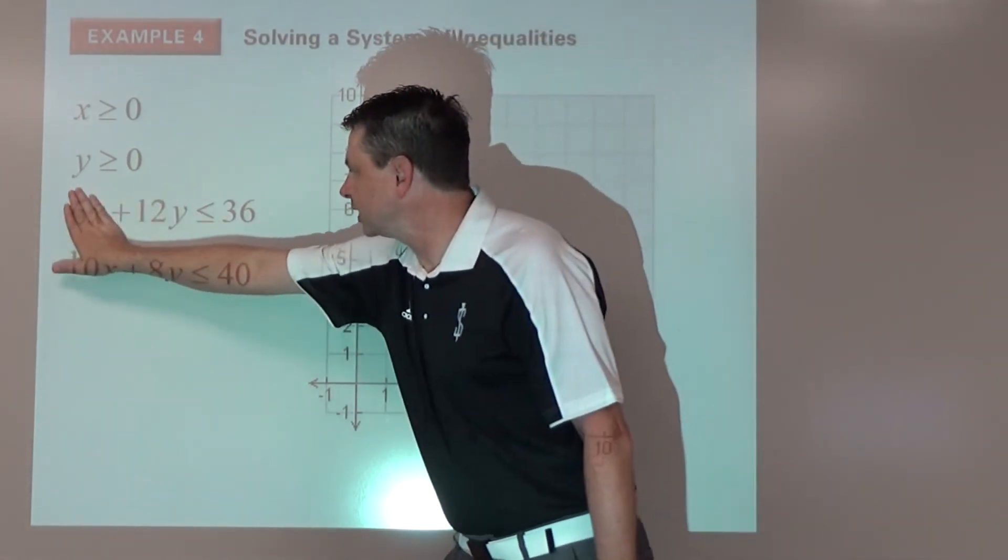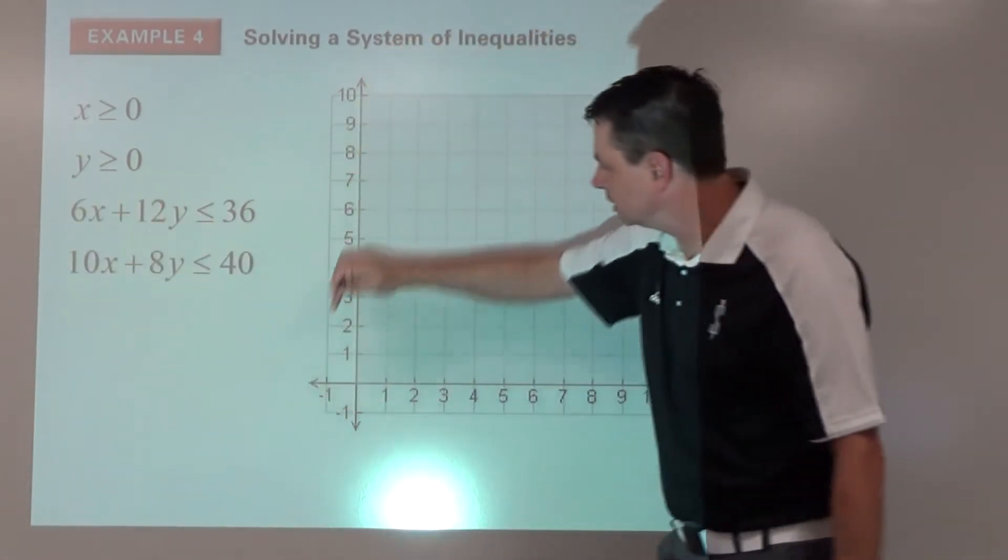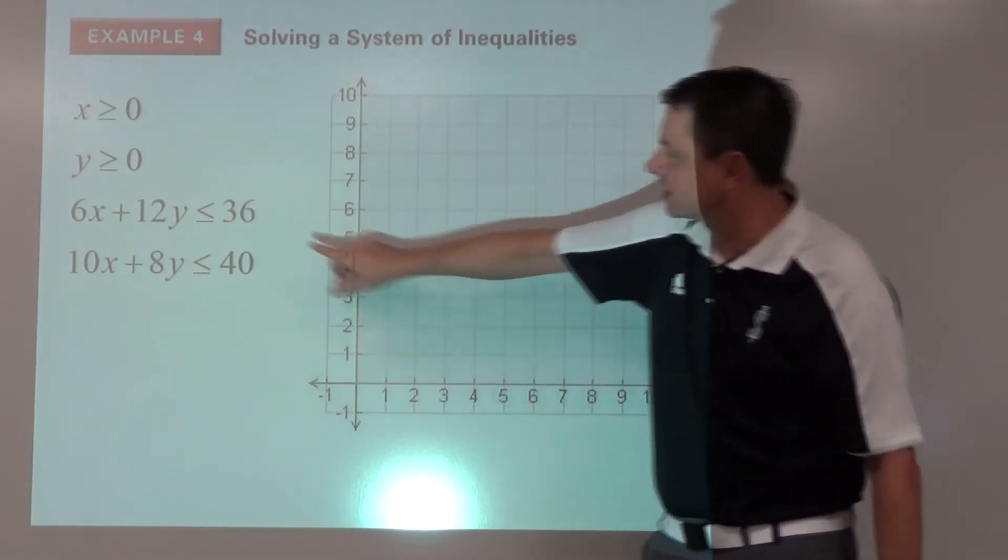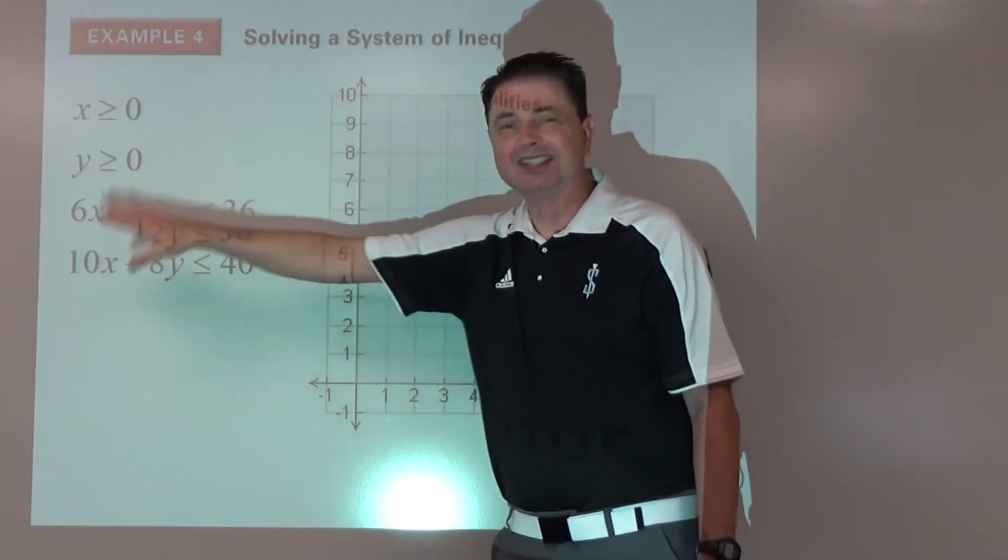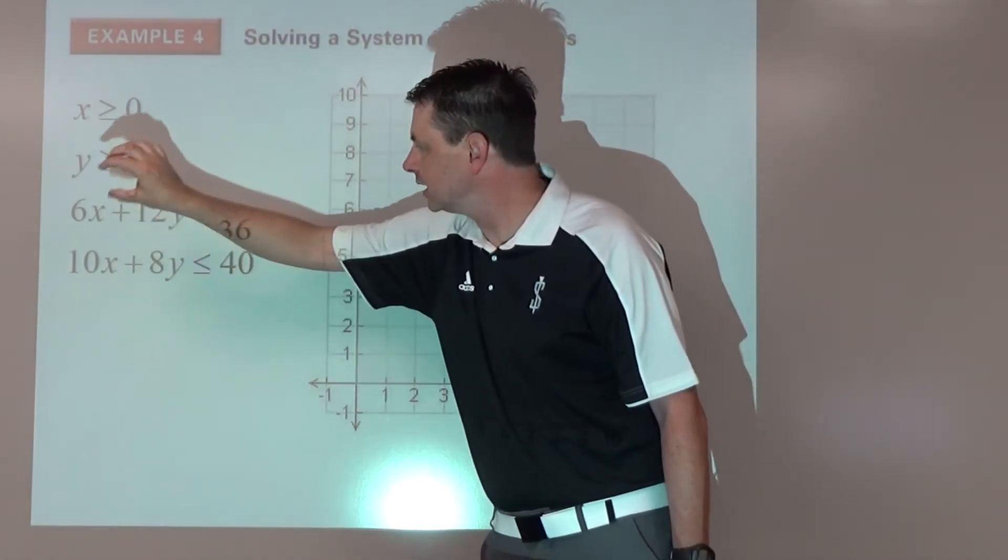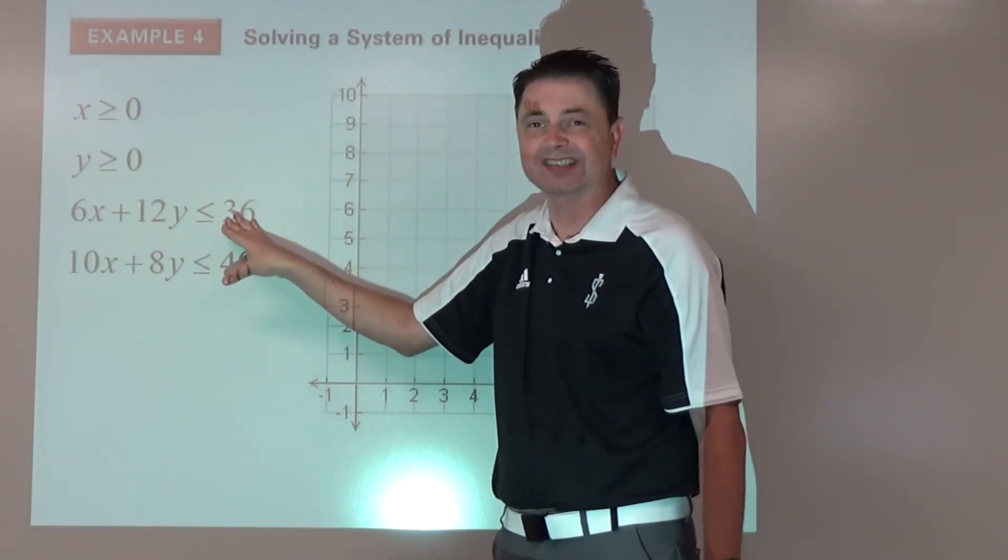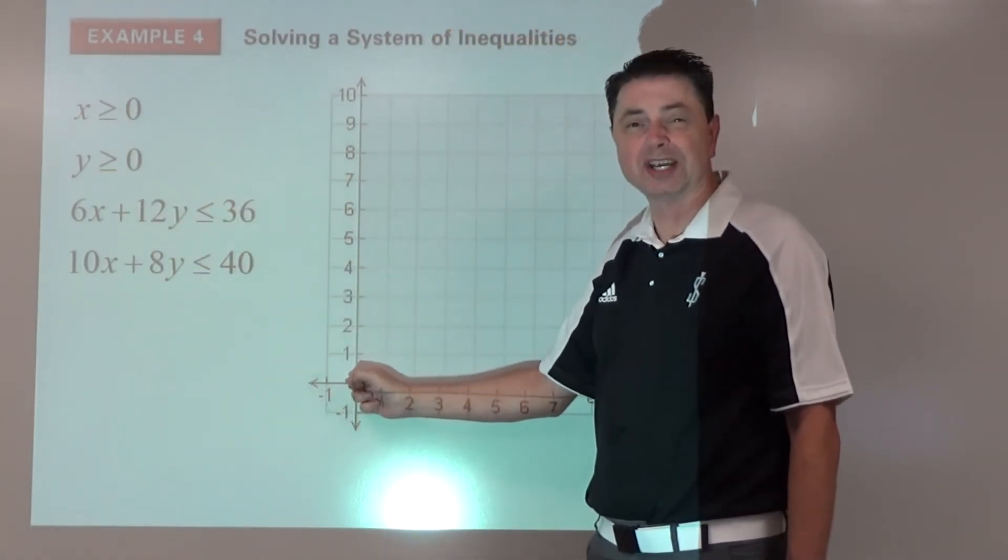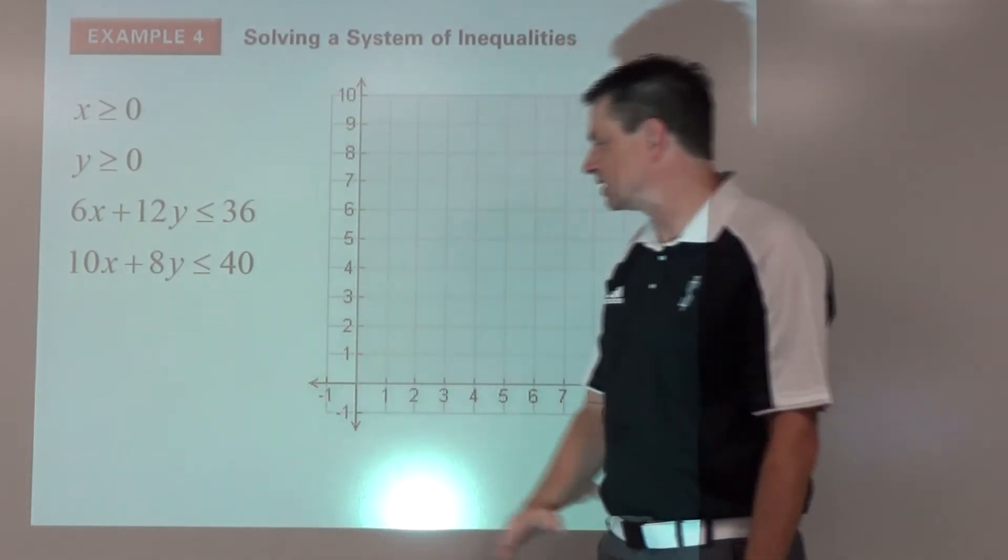And then same thing here, y is 3. Draw my line. It's going to be solid. I would test 0 comma 0. Is 0 less than or equal to 36? Yes, so I want to shade the side the origin is on, which in this case is going to be below.